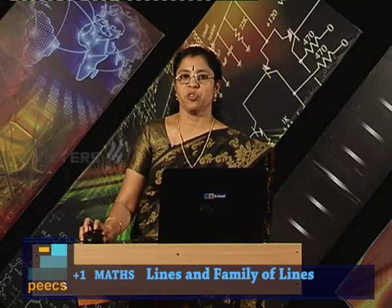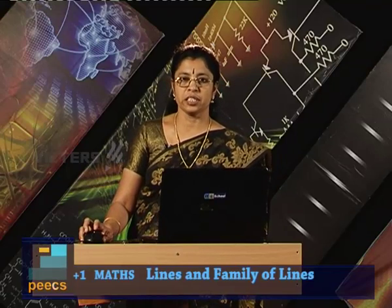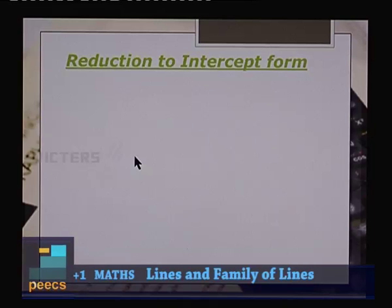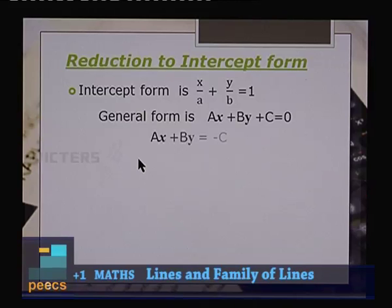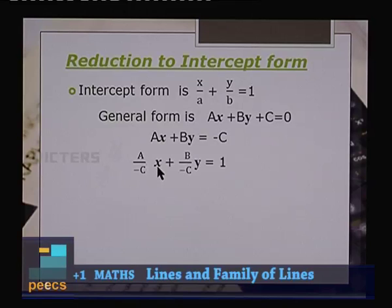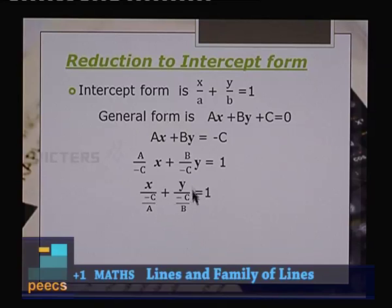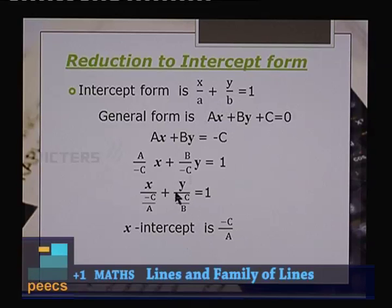Reduction to intercept form: from ax + by + c = 0, divide by −c to get (a/−c)x + (b/−c)y = 1, which is x/(−c/a) + y/(−c/b) = 1. Therefore the x-intercept is −c/a and the y-intercept is −c/b.